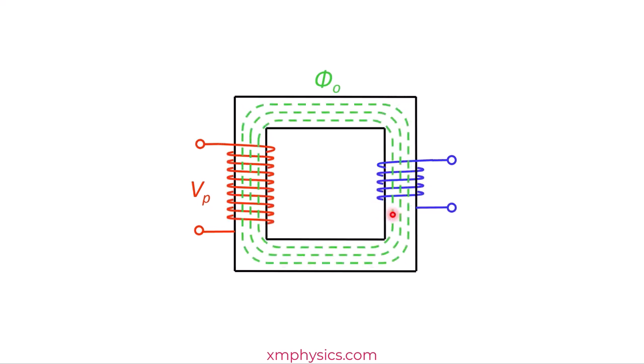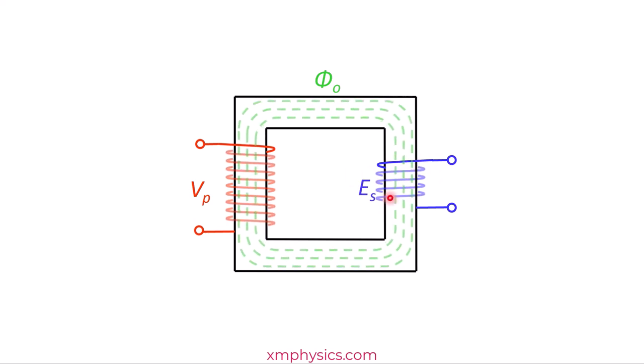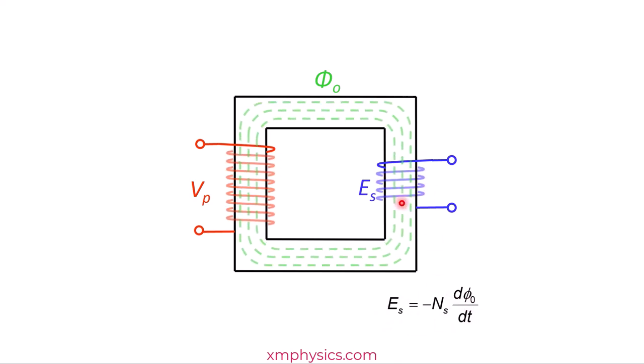So look at this secondary coil. It's experiencing a changing magnetic flux linkage, doesn't it? So what does Faraday's law say? There's going to be an induced EMF denoted by Es across the secondary coil. And according to Faraday's law, we can write Es to be equal to negative Ns d phi dt. So Ns is the number of turns in the secondary coil.